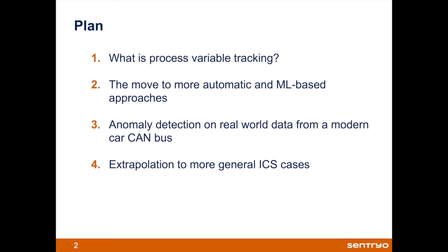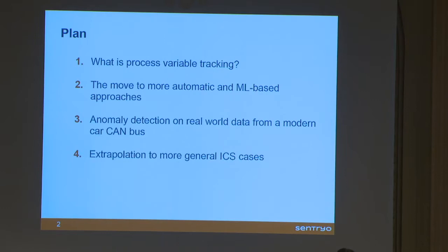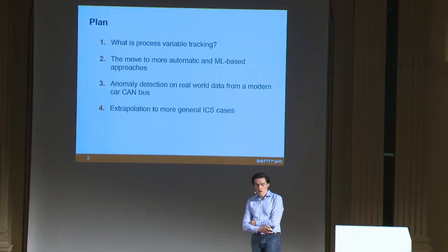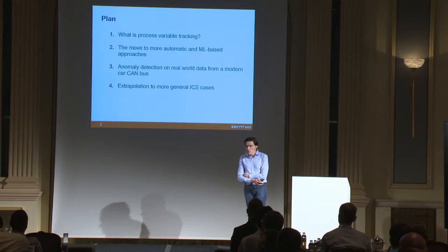Here is the outline of the presentation. I'm going to start by defining a process variable — for us, it's everything that can describe a process, such as any sensor readings like pressure, temperature, or anything like this. Then I'll talk about what is done today in this field, before jumping to our car experiments, applying machine learning to CAN traffic, and seeing if these concepts can be applied to more traditional process control and ICS.